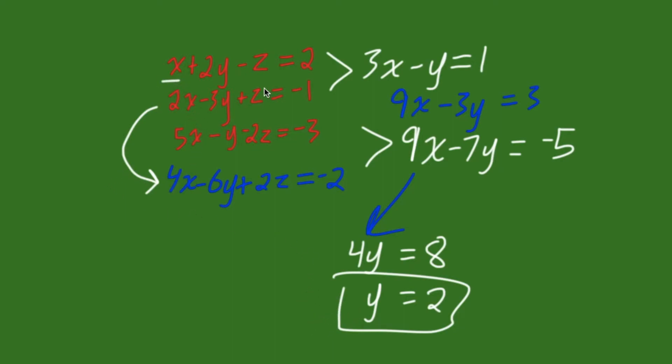All we have left to find is x and z. And, we have solved this. Now, we can get our next variable by substituting y equals 2 into one of our equations that has two variables. So, either this one or this one. Let's just choose the top one. So, we have 3x minus y equals 1.